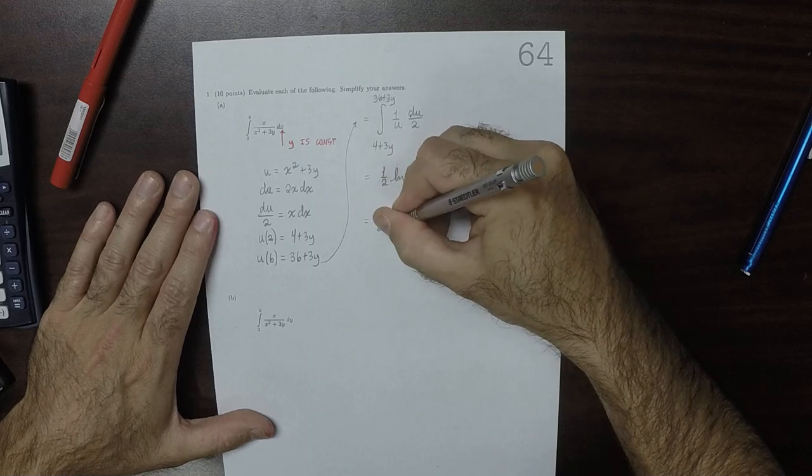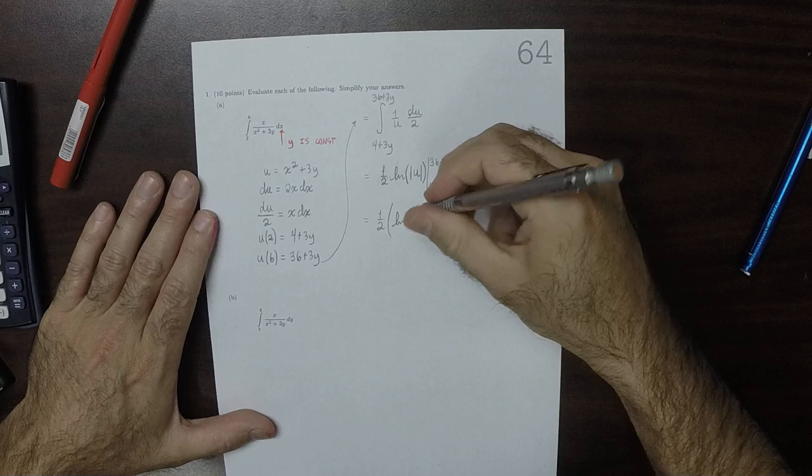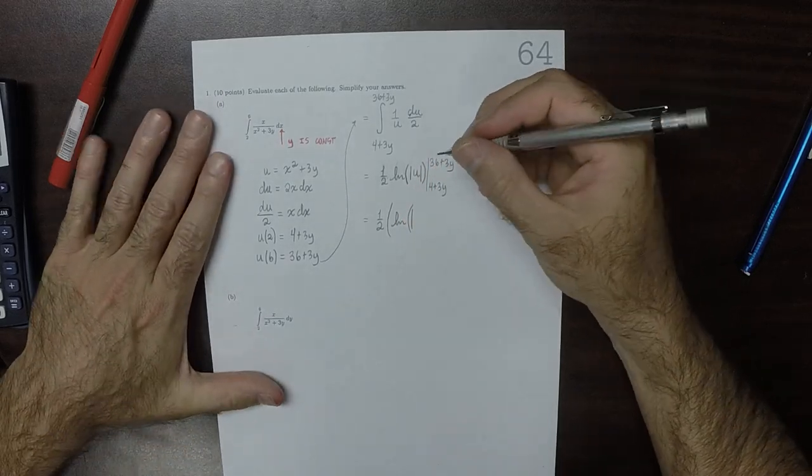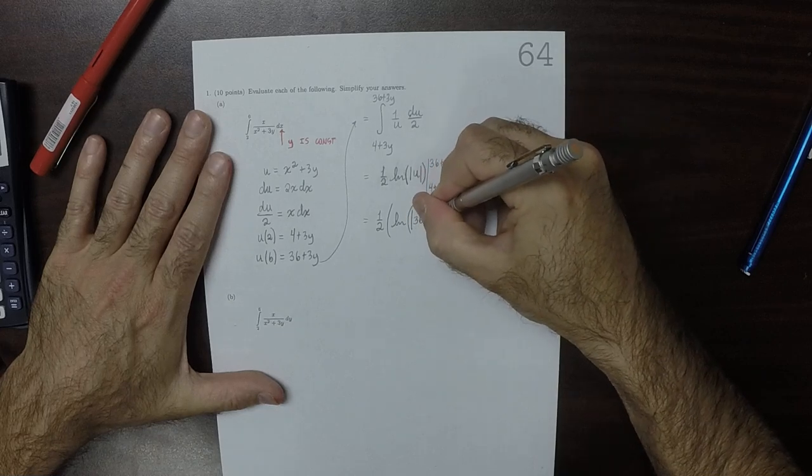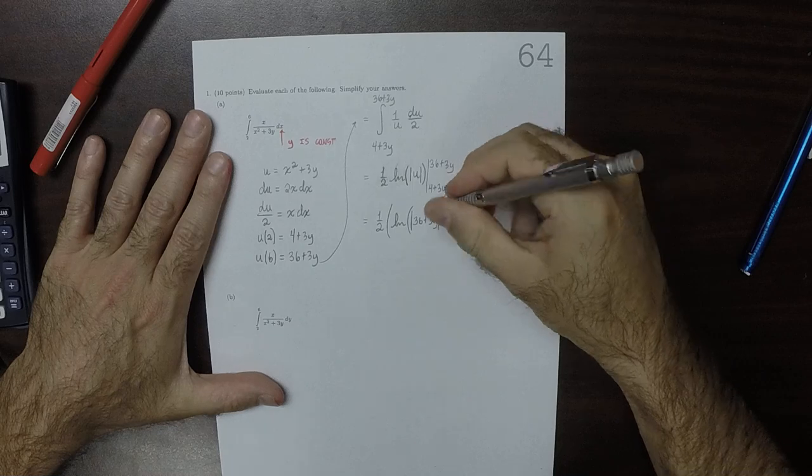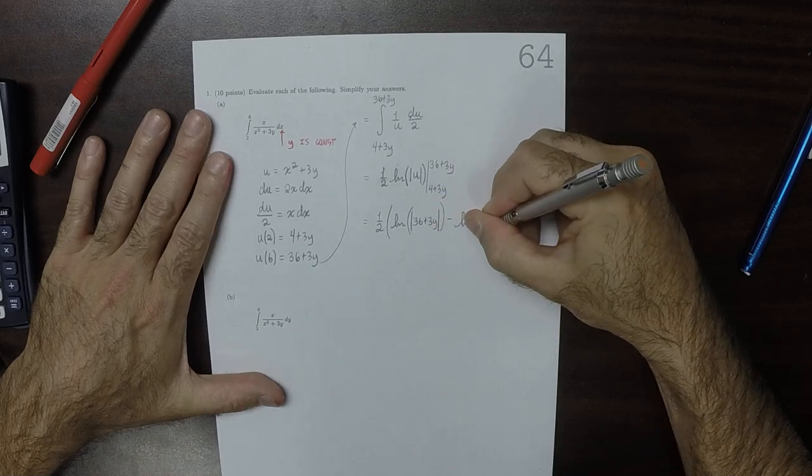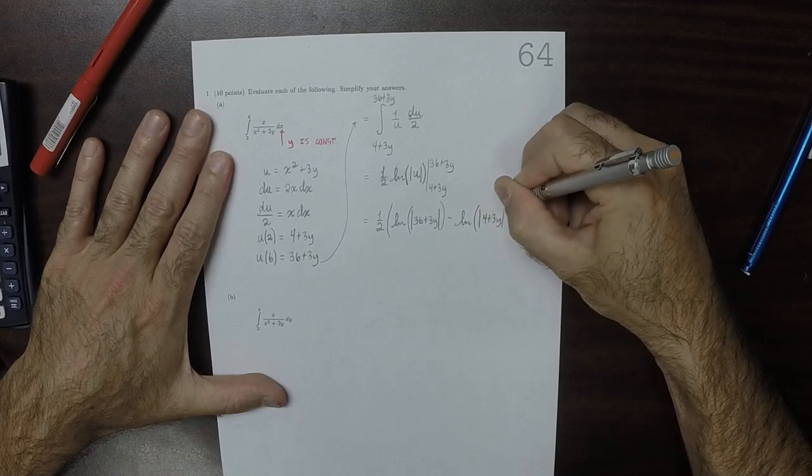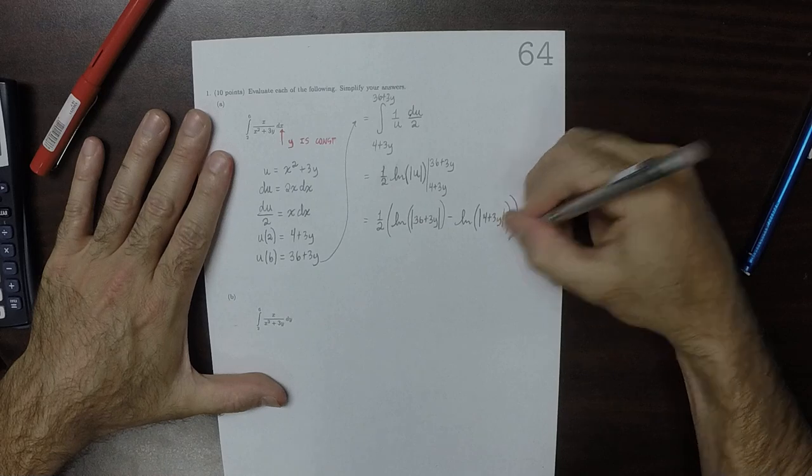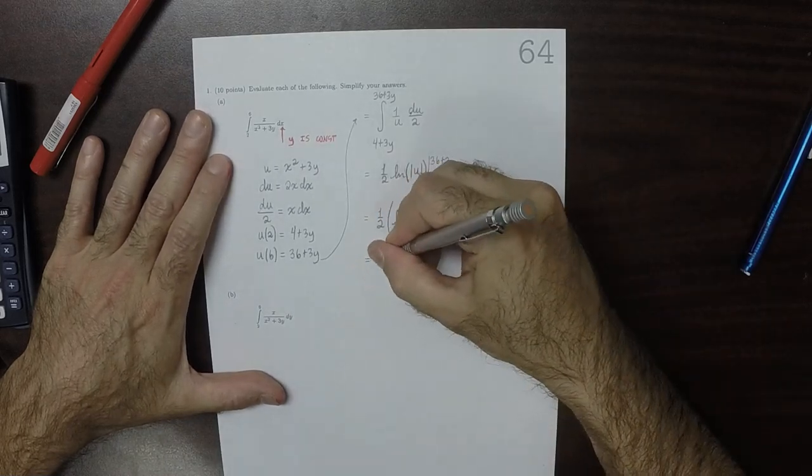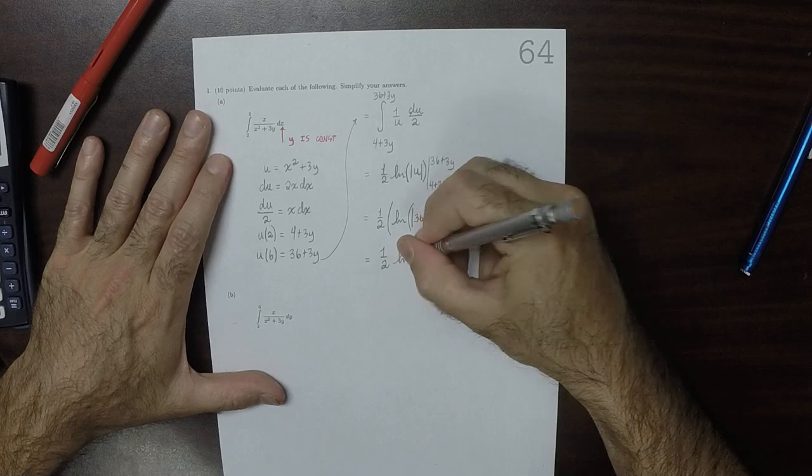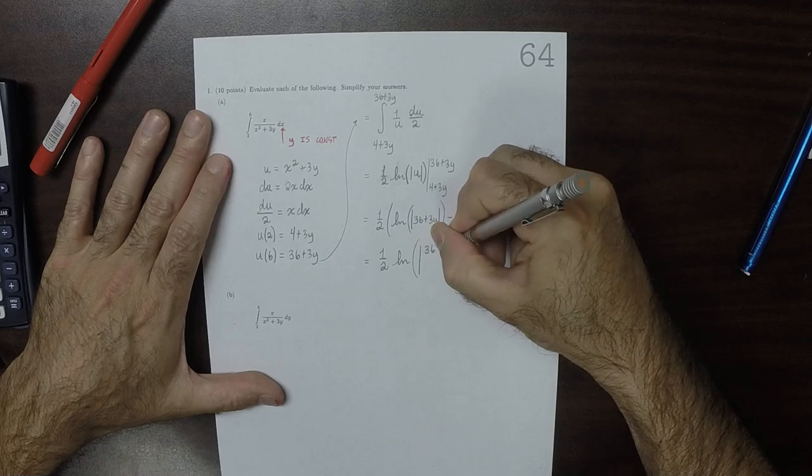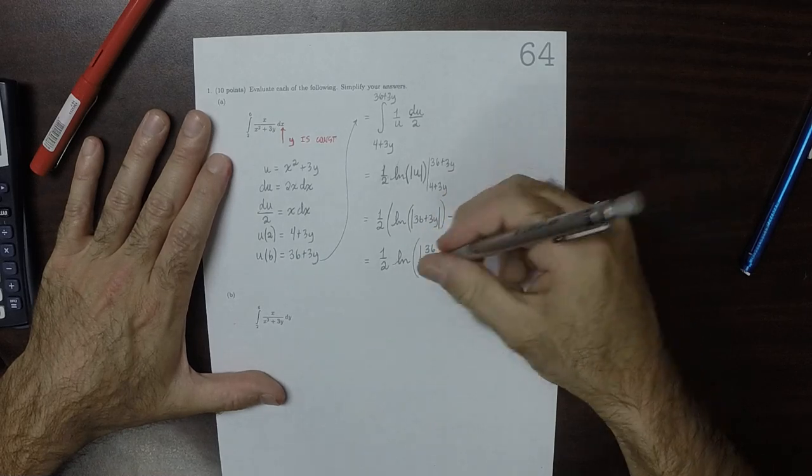So let it be 1 half. And those natural logs can be combined to natural log soup. 1 half natural log and the absolute value of 36 plus 3y divided by 4 plus 3y.